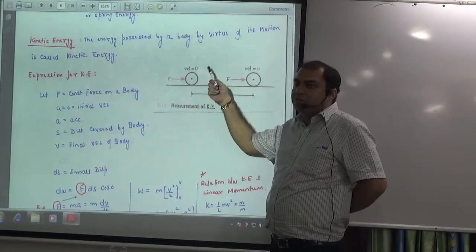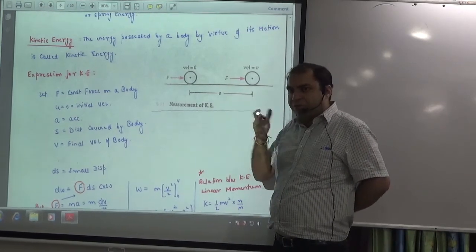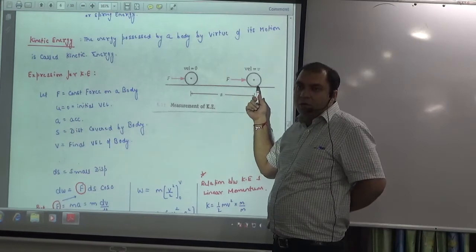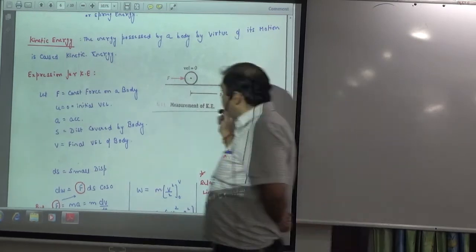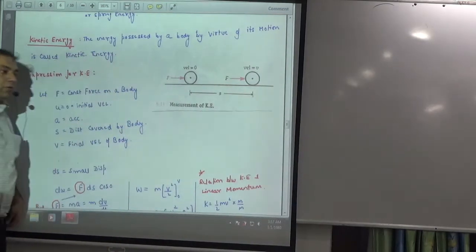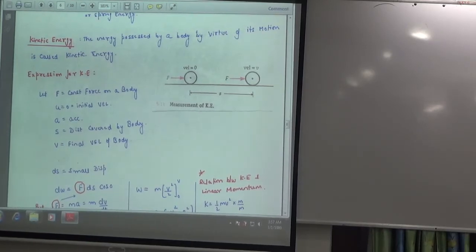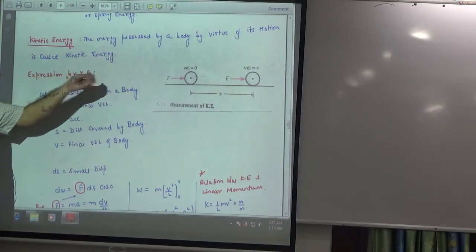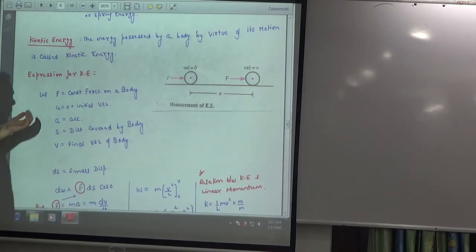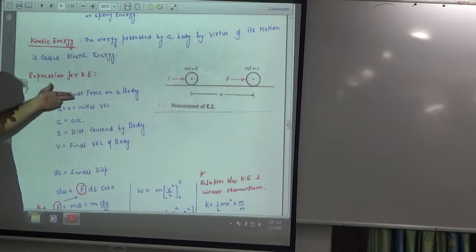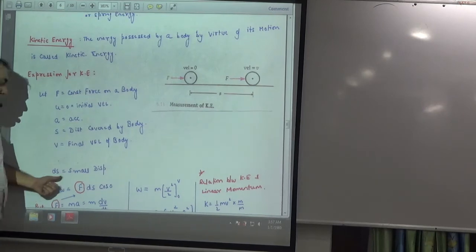This body, its initial velocity was zero. You put force on it, a constant force, not a variable force. Constant force on it, and this body came here and its velocity is V. Velocity is this big because you put force on it. So how much displacement it covered? S. You have to know how much kinetic energy it stored or possessed. F is constant force, U is initial velocity zero, acceleration is A, S is distance and V is final velocity.